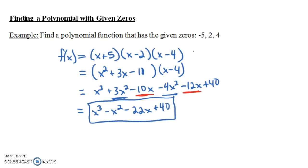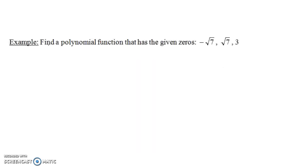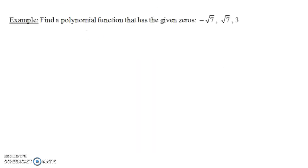You could check your answer by plugging in 4 — do you get 0 as output? Same thing with 2 and -5. It turns out that you will. Let's try another example: find a polynomial that has the given zeros.